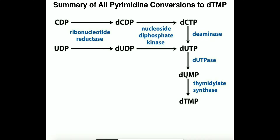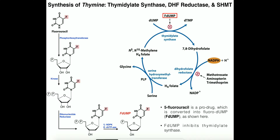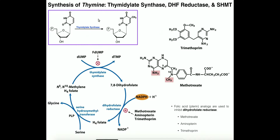Thymidylate synthase will also only react with the monophosphate form of the deoxyuracil nucleotide. So if you had DUDP or DUTP it will not react with those versions — it has to be the monophosphate. That's why the product is deoxy-TMP, and it will take two phosphorylation reactions to get this up to DTTP, which can then be imported into the nucleus and used in DNA replication. Here is the general reaction of thymidylate synthase: DUMP is converted into DTMP.